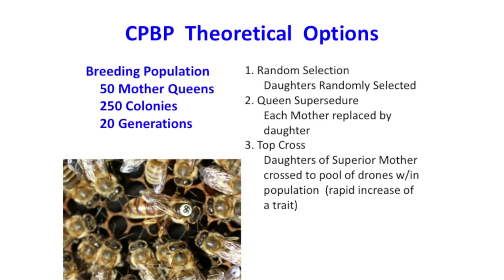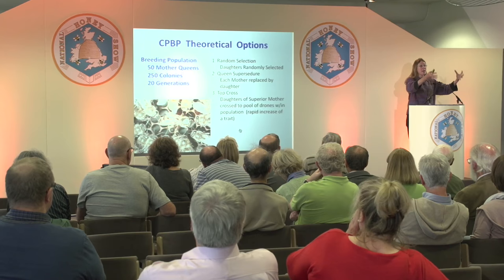The theoretical model behind this is based on three different aspects: random selection, queen supersedure, and a top cross. Random selection is just within this population. I've chosen to work with Carniolan honeybees. Establish a population — I started with about 50 to 60 different queen mothers, collecting Carniolan queens from all over the U.S. and Canada. Then you establish a test population, raising a few daughters of each of these mothers so you have a nice big population of colonies to select from, and from those, select the top third as your breeders for the next season. Then you just keep repeating that cycle.